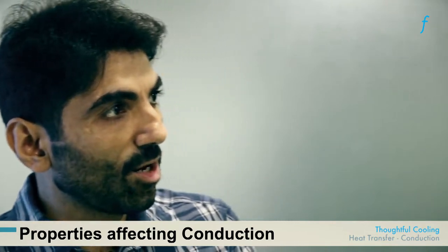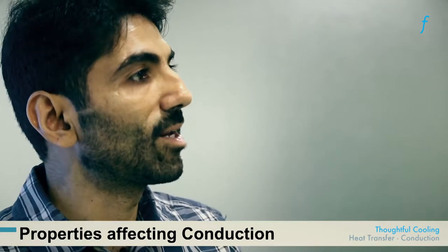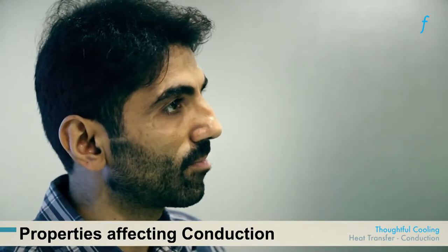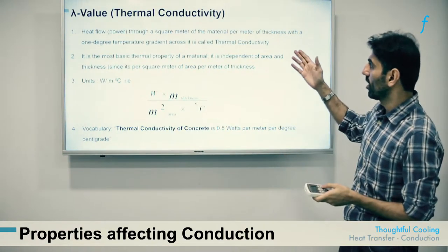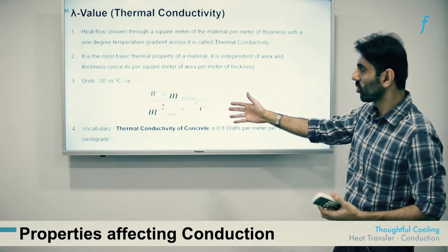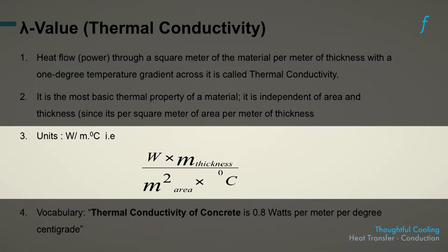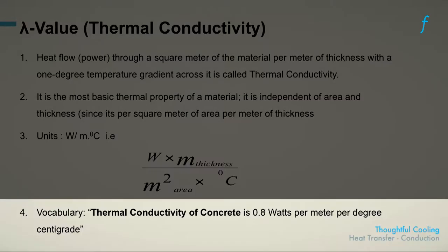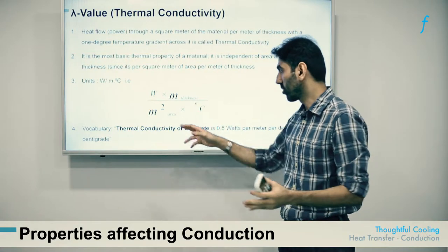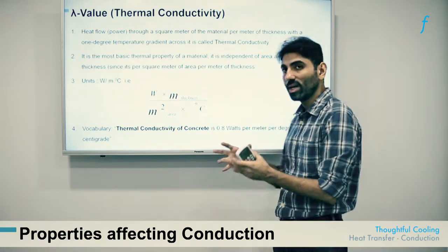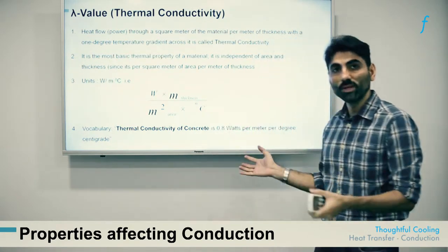For instance, it would be absurd to say 'the density of one kg of milk is a certain value' — one simply states the density of the material, not the mass, which remains inviolable. Therefore, thermal conductivity is a very basic property of a material, irrespective of the quantity. The units are watts per meter degree centigrade. For example, the thermal conductivity of concrete is 0.8 watts per meter per degree centigrade, with no mention of total mass.